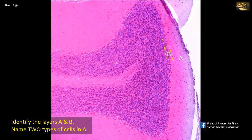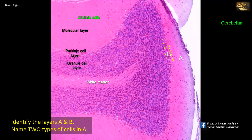Identify layers A and B, and name two types of cells in A. This is a histological section of the cerebellar cortex stained with hematoxylin and eosin. The cortex consists of three layers. A is the outermost layer, called the molecular layer. B is the Purkinje cell layer. The deepest layer is the granule cell layer. The molecular layer A consists of two types of cells: stellate cells located in the upper region, and basket cells located deeply, adjacent to the Purkinje cell layer.